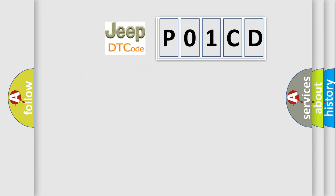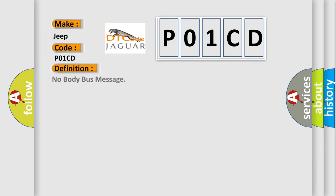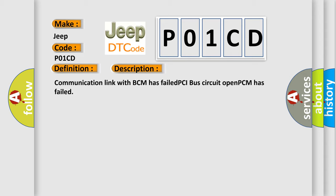So, what does the diagnostic trouble code P01CD interpret specifically for Jeep car manufacturers? The basic definition is: No body bus message. A short description of this DTC code: Communication link with BCM has failed, PCI bus circuit open, PCM has failed.